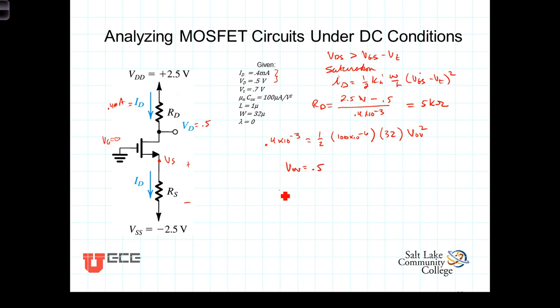you get VOV is equal to 0.5 volts, so V-GS minus V-T equals 0.5 volts, or V-GS equals 0.5 plus V-sub-T, but we know V-sub-T is 0.7 volts, so plus 0.7 volts. Therefore, V-GS is equal to 1.2 volts. So, V-GS, the voltage from here to here is 1.2 volts. So, for 0, then V-sub-S must equal minus 1.2 volts, and we can now go ahead and calculate the value of R-sub-S.